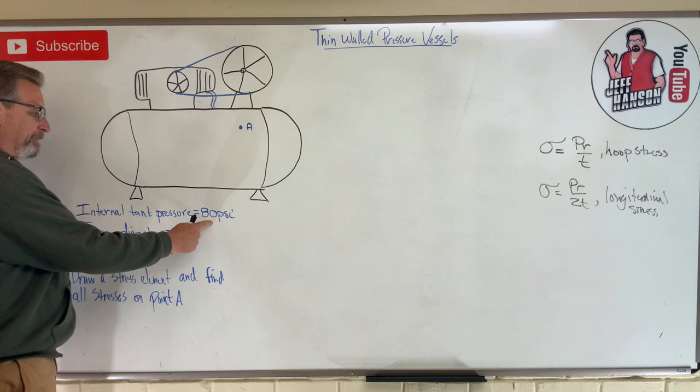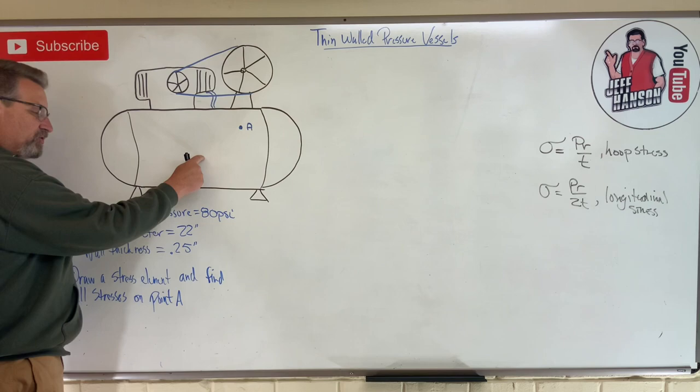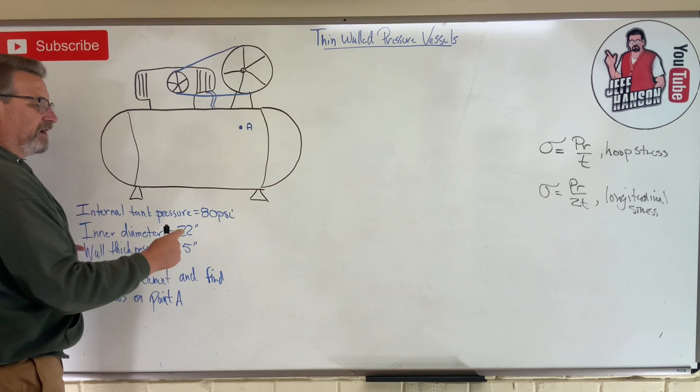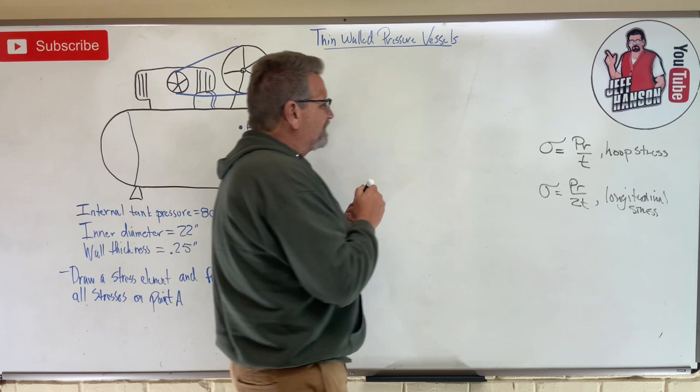This problem says you've got an internal tank pressure of 80 psi, you got an inner diameter of 22 inches, don't get that confused with radius please, and then you got wall thickness of a quarter of an inch.